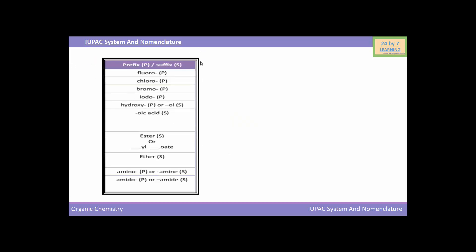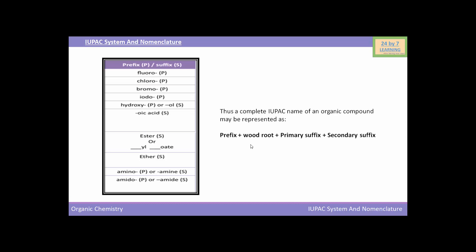In this table, some prefixes and suffixes are given. Thus, a complete IUPAC name of an organic compound may be represented as: prefix + word root + primary suffix + secondary suffix. This is the way of naming an organic compound in the IUPAC system.